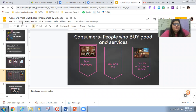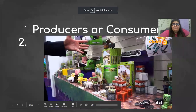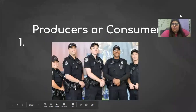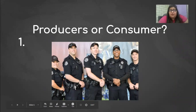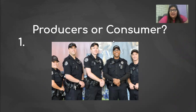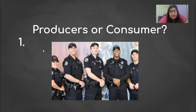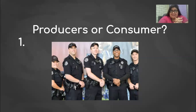You are going to identify what is a producer and what is a consumer. You can write a P or a C — P stands for producer, C stands for consumer. Number one is a police officer. Is a police officer a producer of goods and services or a consumer of goods and services? Remember, producers don't always have to make something — they can give services. Is a police officer a producer or a consumer? Write it down on number one.